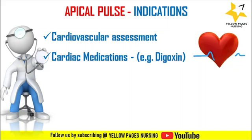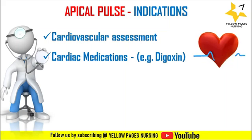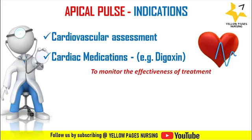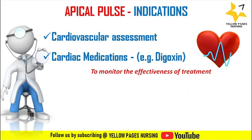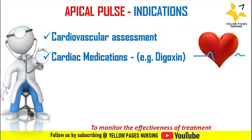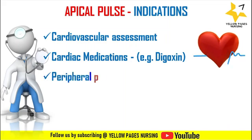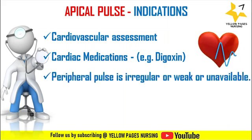Another indication includes medications that alter the heart rate and rhythm, for example digoxin. When patients with heart conditions are under treatment with cardiac drugs, apical pulse can be used to monitor the effectiveness of treatment and how well the patient is responding. Apical pulse is also monitored when peripheral pulse is irregular, weak, rapid, or unavailable.